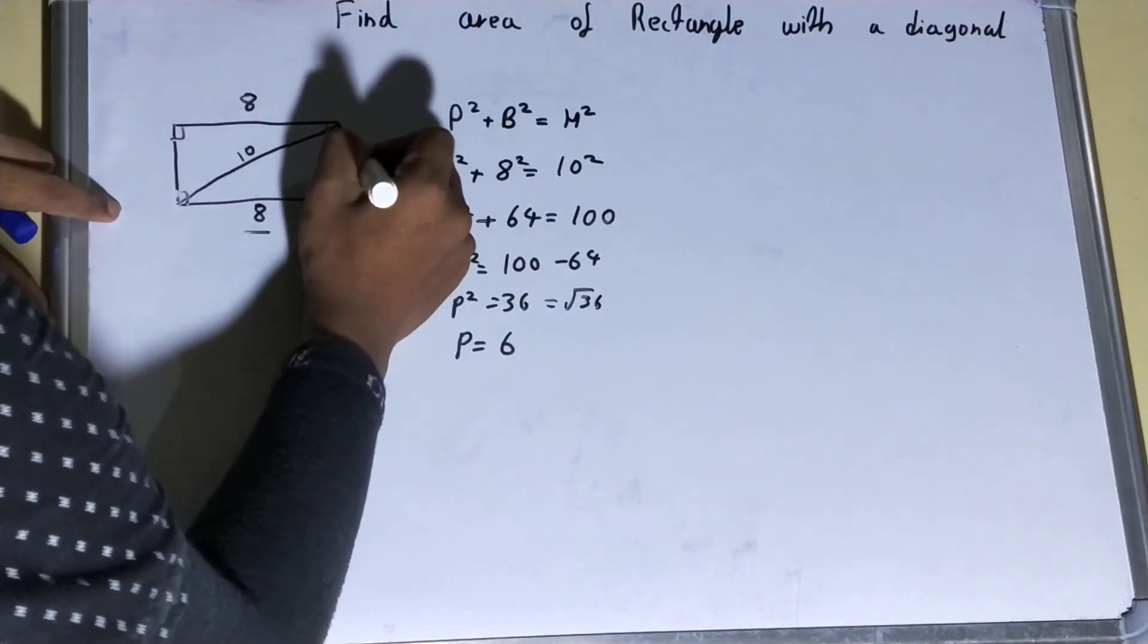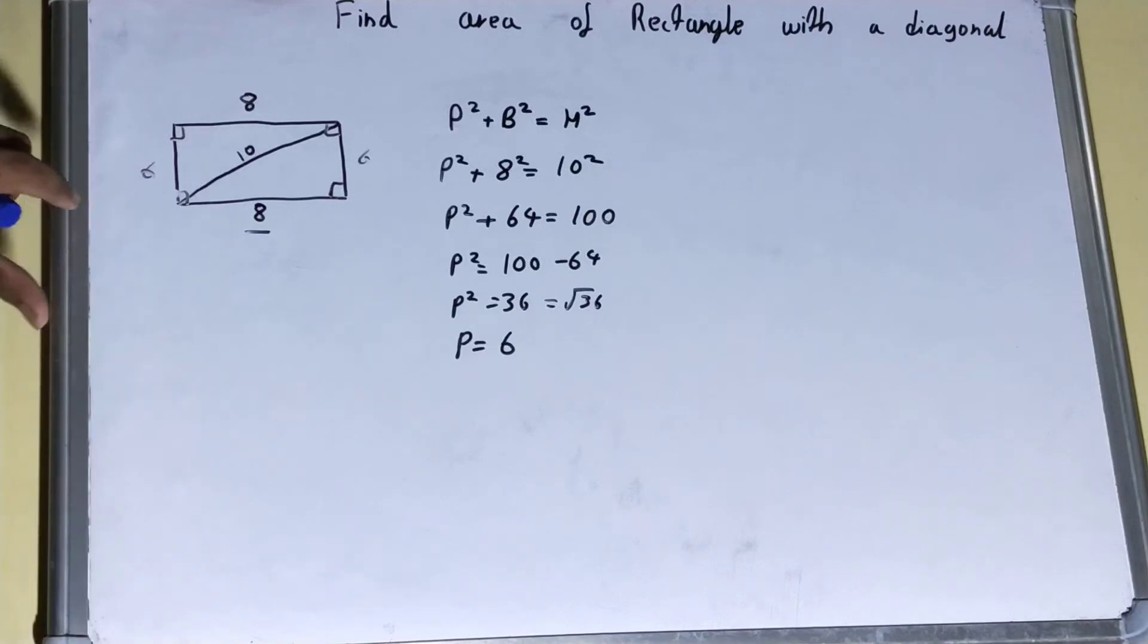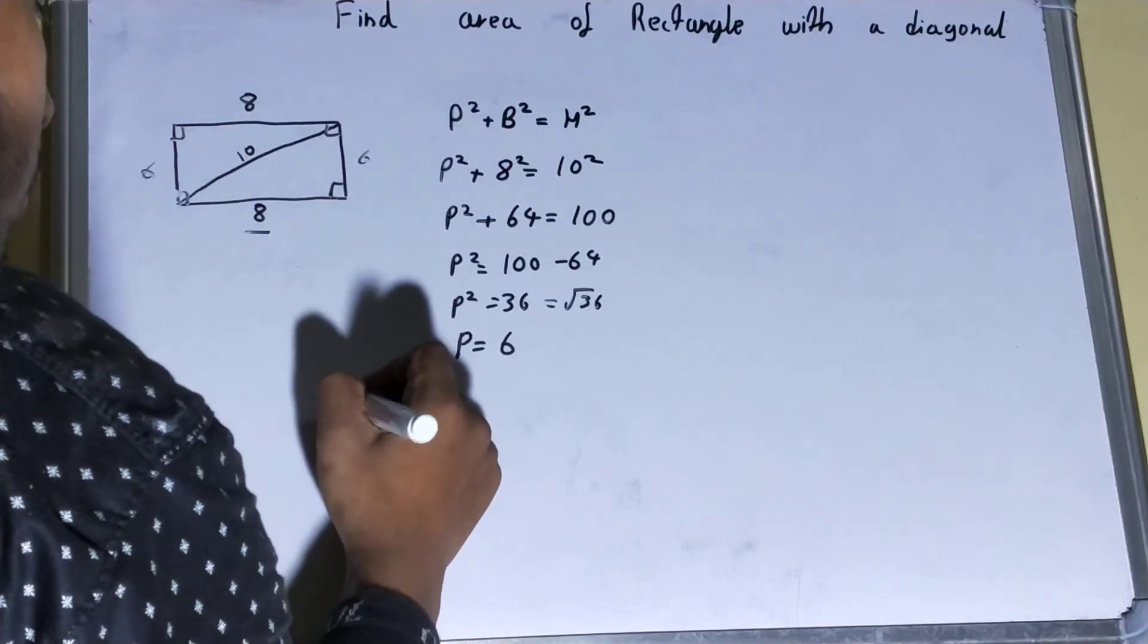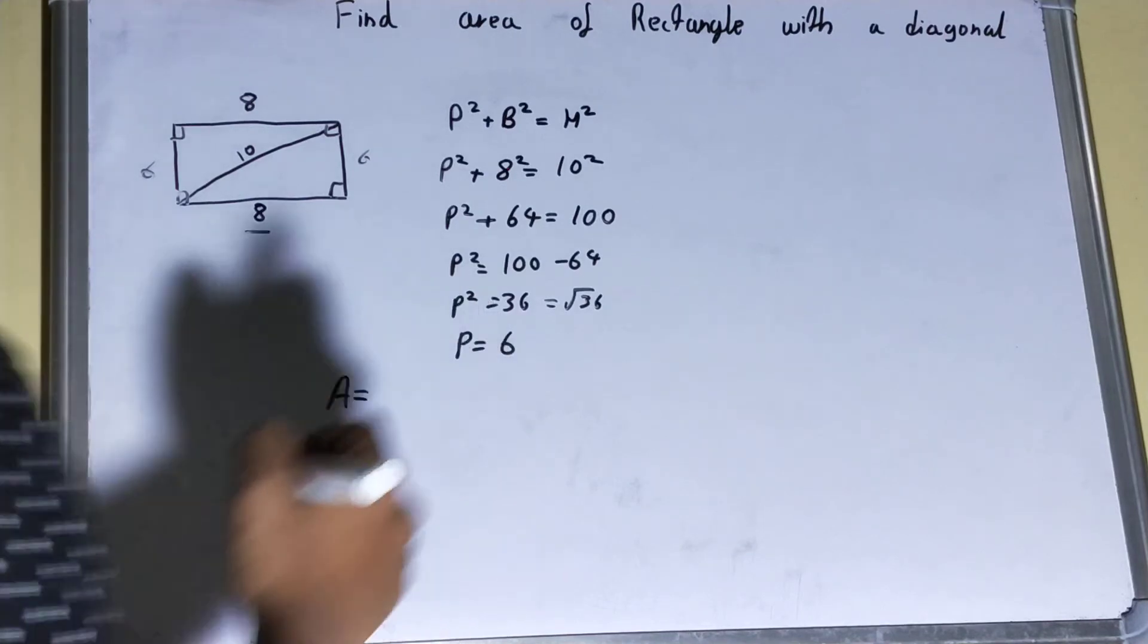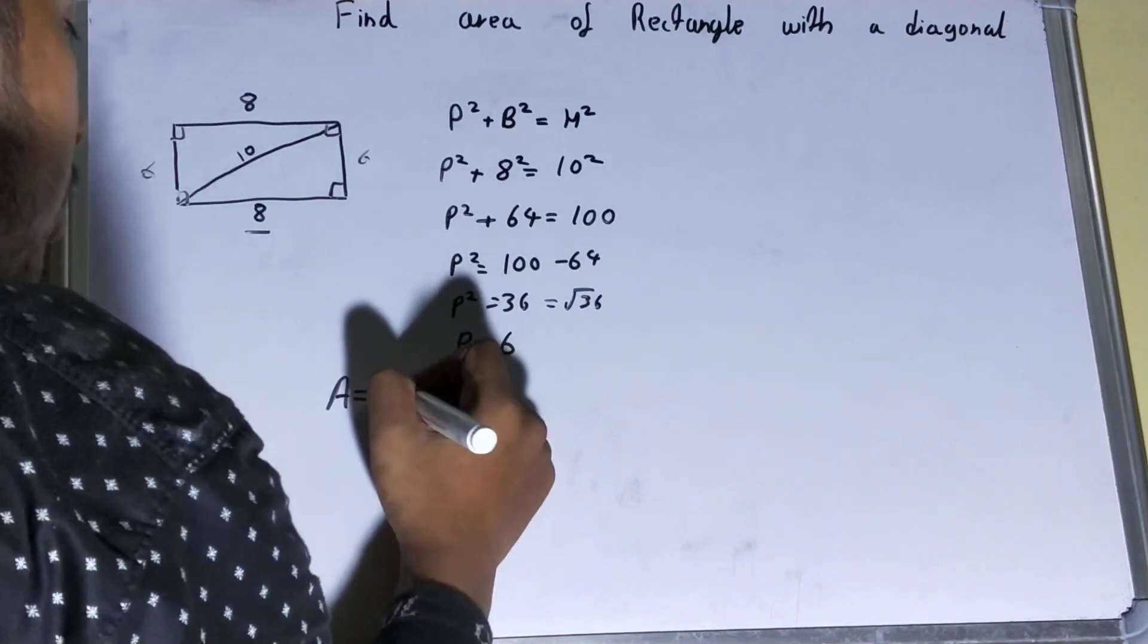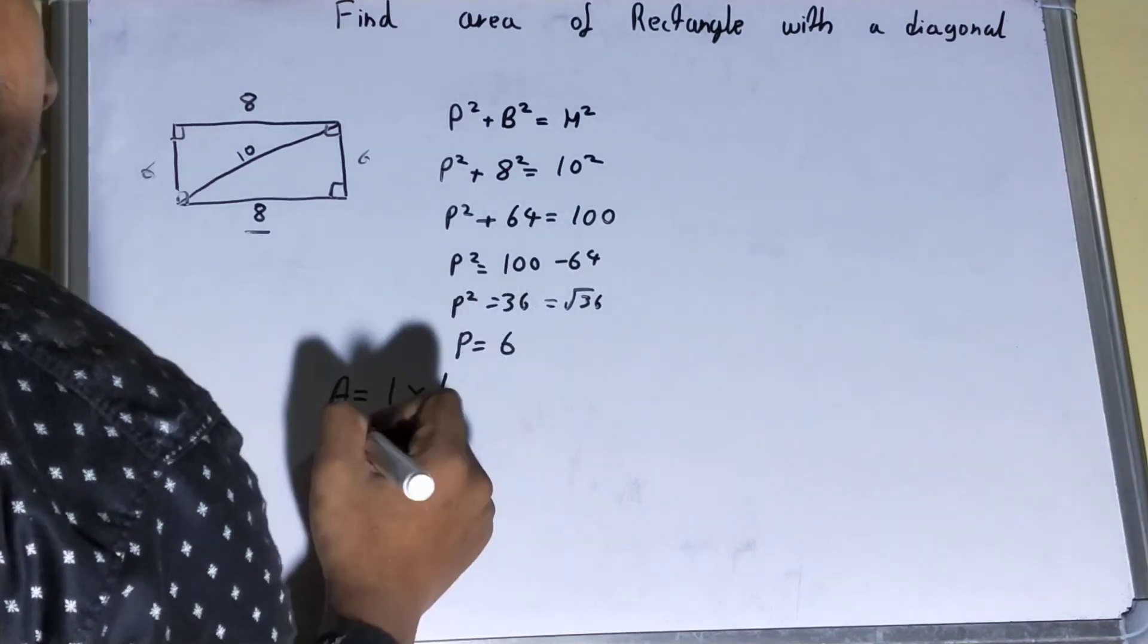So we got the sides as well, 6. Now to find out the area, what we need to do is, for the area of rectangle, the formula is area equals length into breadth.